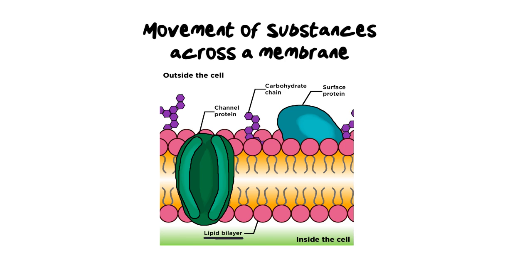Water is a unique substance in that it has almost like a privilege in easily moving into the cell. Basically, if water moves from the outside of the cell, it's attracted in towards the hydrophilic side of our bilipid layer, then gets repelled through the hydrophobic tails and pushed through to the inside of the cell.